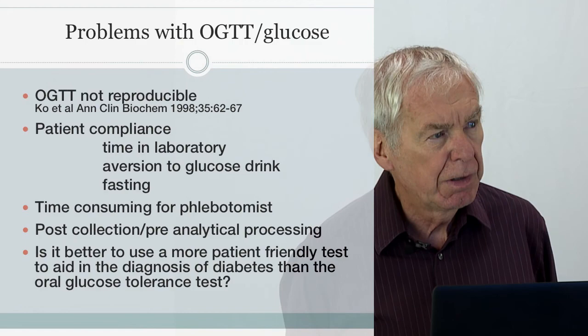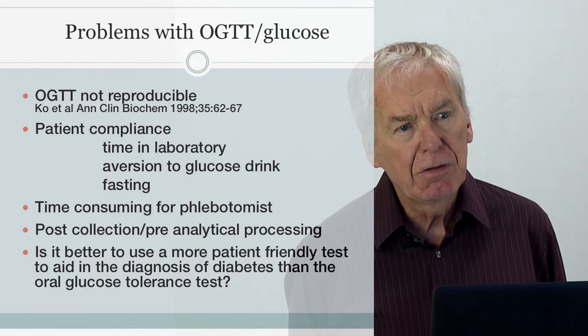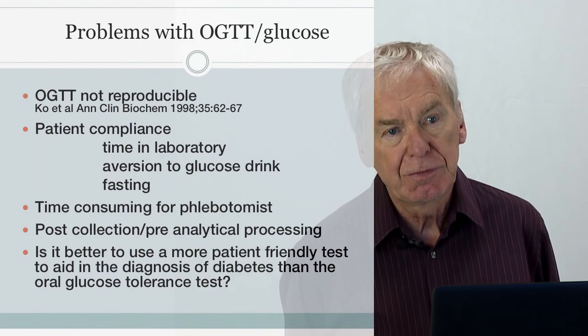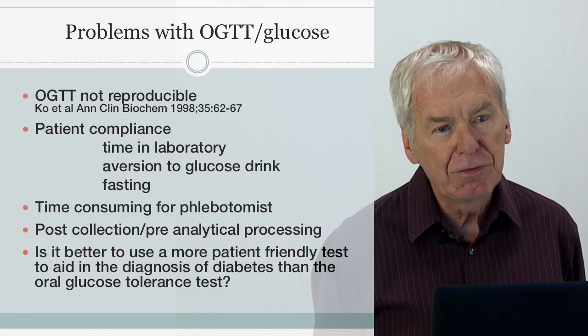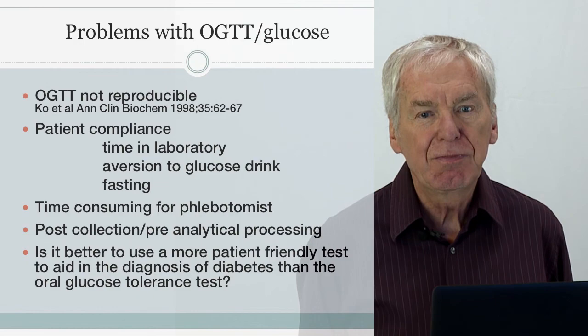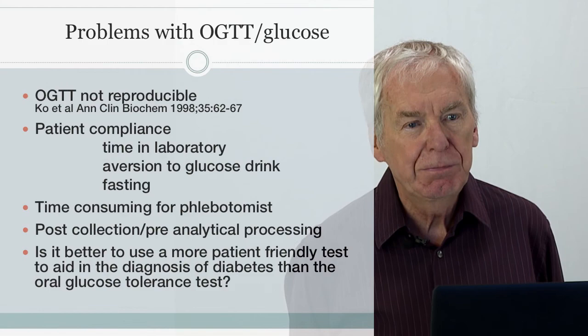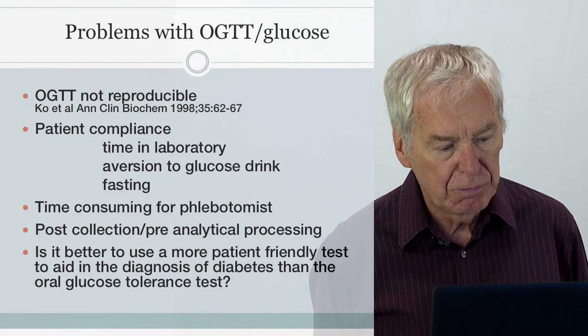There are some problems with the oral glucose tolerance test. First, it is not reproducible — done on five successive days, it is quite possible you will get five different answers. There is also a problem with patient compliance: patients have to spend two hours in the laboratory, and a common question is whether they can leave to go shopping, when the rulebook says the patient must be at rest for the entire two hours.